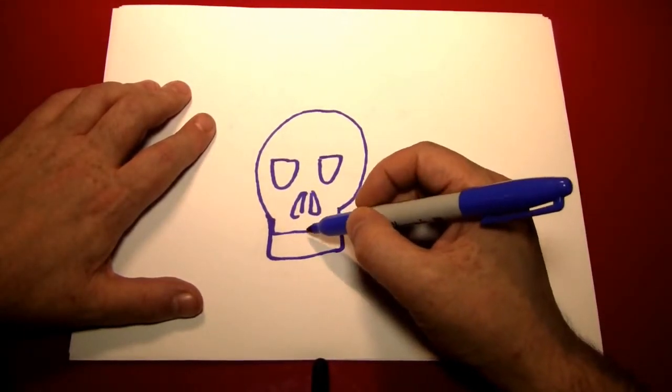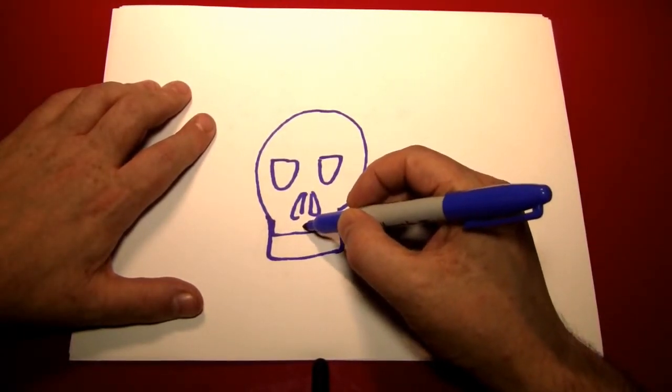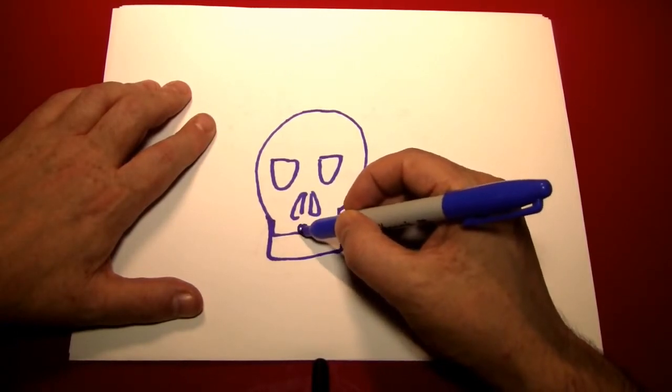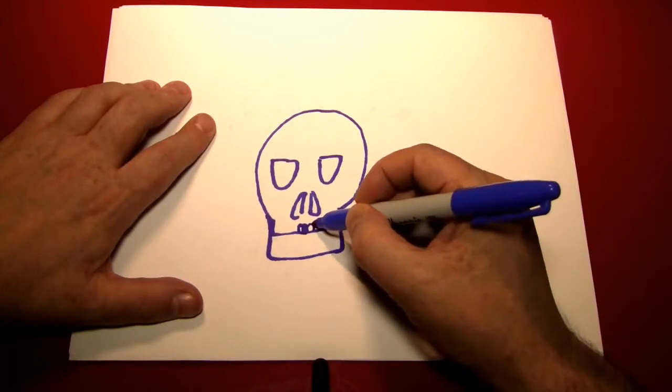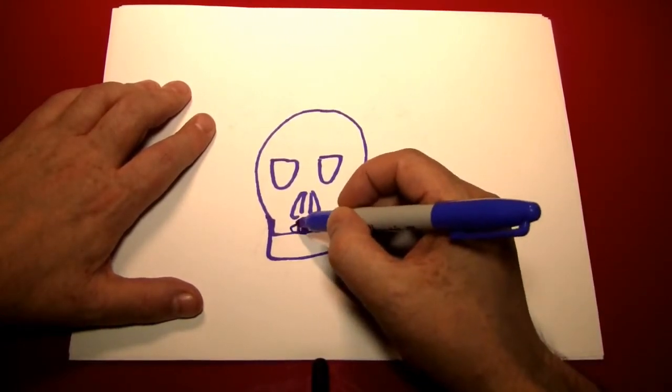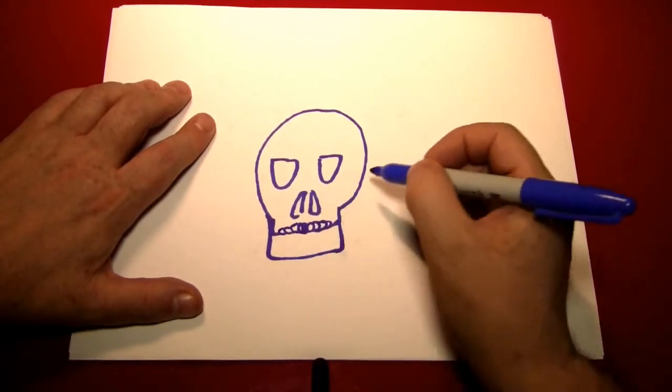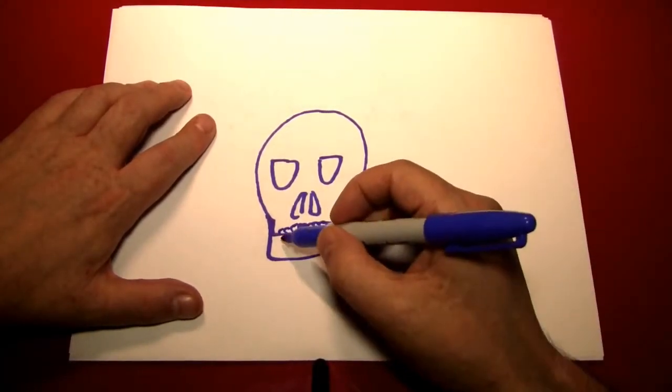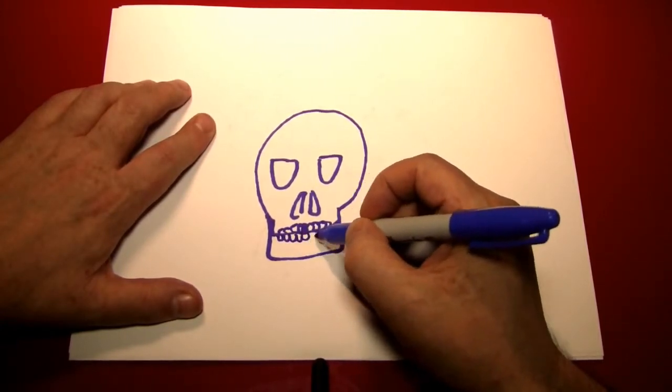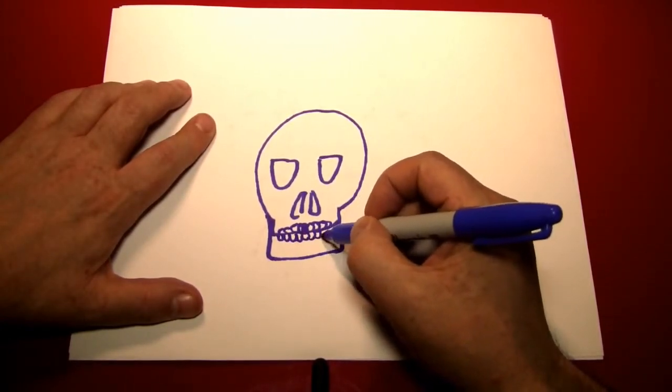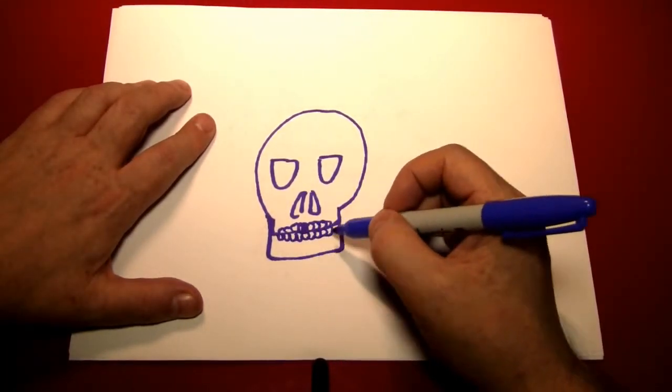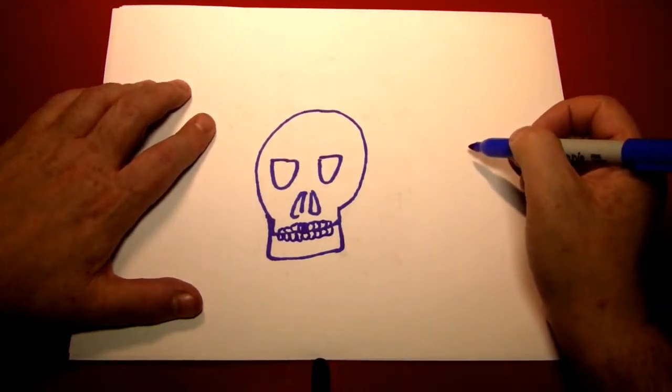Next, we're going to make the teeth. We can make them by starting in the center on top of this line with the two front teeth. And then just building out to the sides with little curved lines. Like that. The bottom teeth are even easier because they're all basically the same size. And all you have to do is just make little circular kinds of shapes.